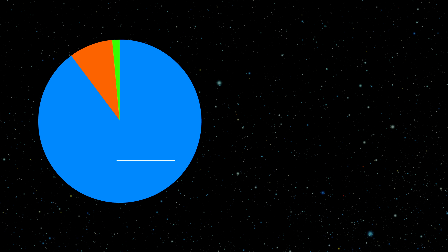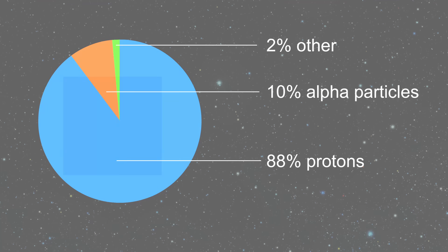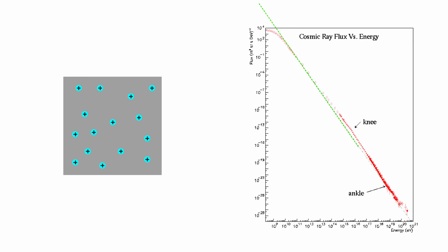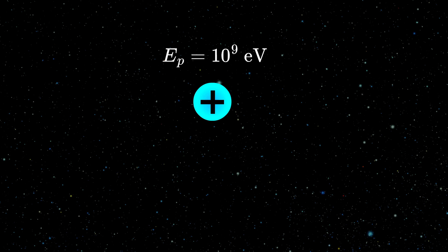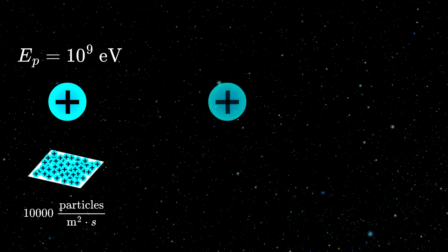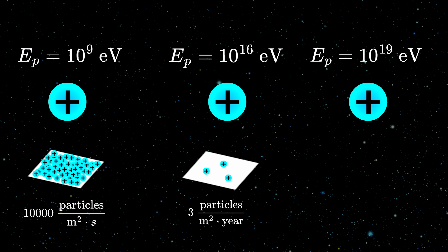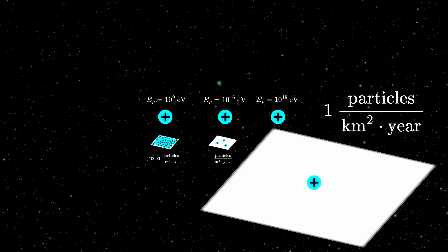Today we know that 88 percent of cosmic radiation is made of highly energetic protons. The number of particles per unit area with a given energy decreases roughly with the third power of energy. For protons with kinetic energy of 10 to the 9 electron volts, that's around 10,000 particles per square meter per second. For protons of 10 to the 16 electron volts, it's just three particles per square meter per year. And for 10 to the 19 electron volts, it's around one particle per square kilometer per year.